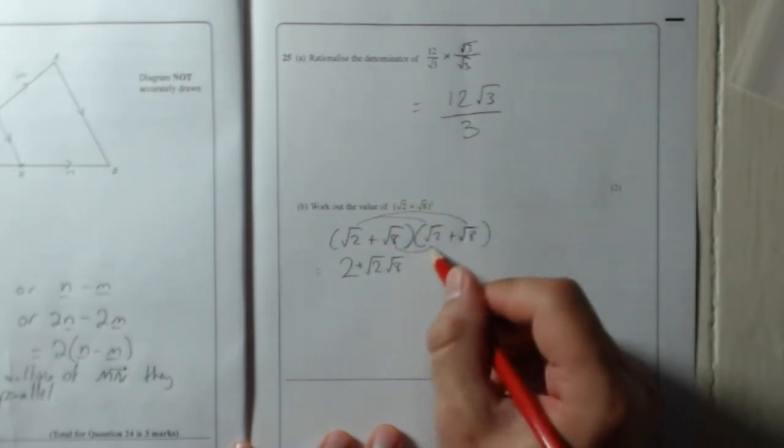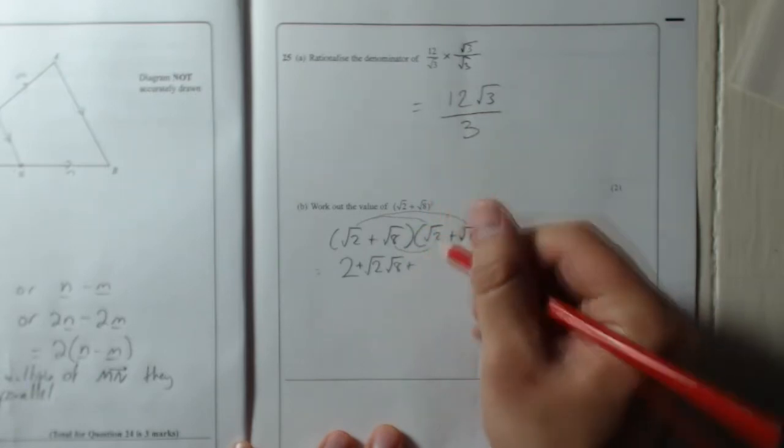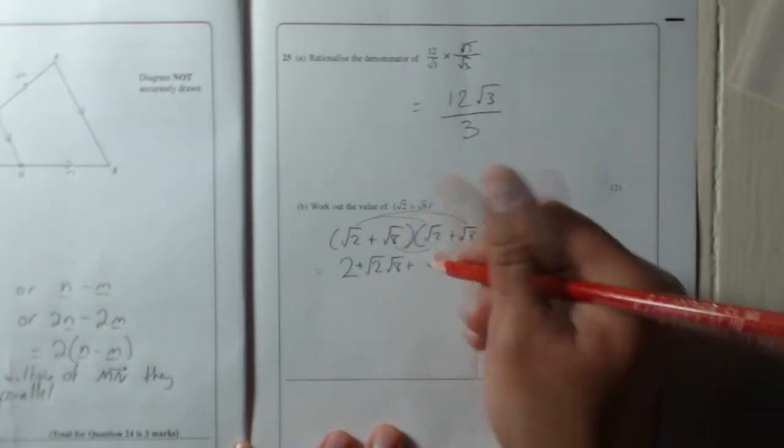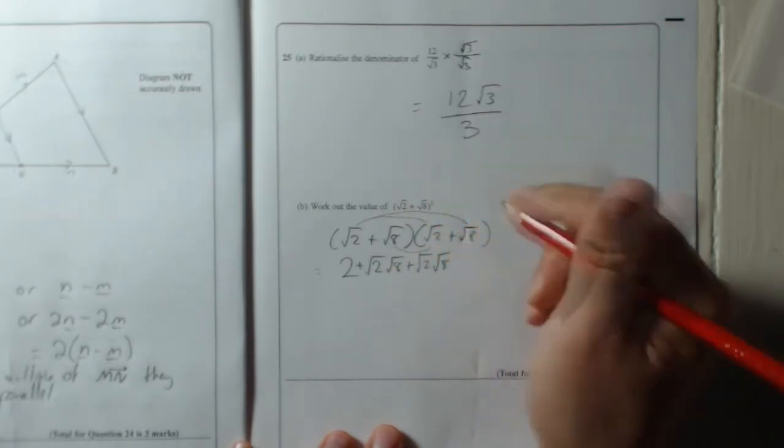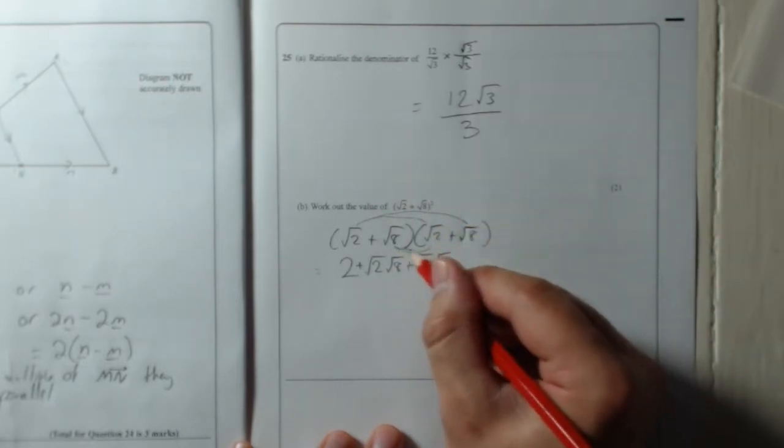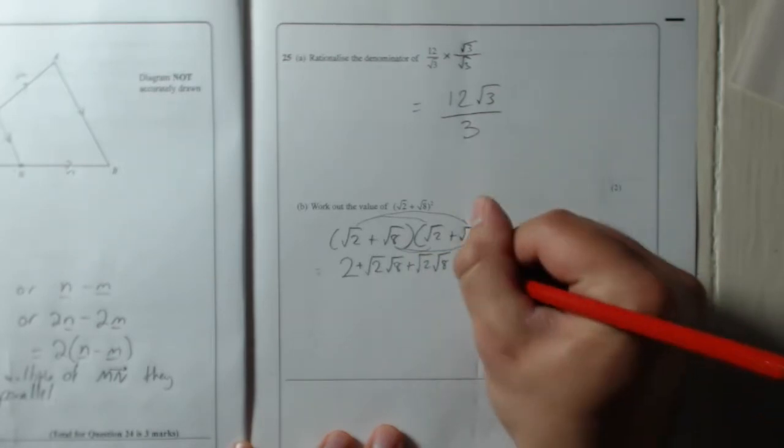Now I'm going to do root 8 times root 2, which is the same again. Remember, root 8 times root 2 is the same as root 2 times root 8, so I'm just going to write this again: root 2 times root 8. And then last bit, root 8 times root 8 is just 8.